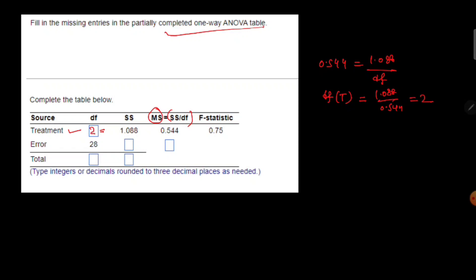The degree of freedom of the treatment will simply be 1.088 divided by 0.544, which equals 2. Now we have the degree of freedom of treatment, which is 2. The degree of freedom of total is the sum of the degrees of freedom of treatment and error: 2 plus 28 equals 30.